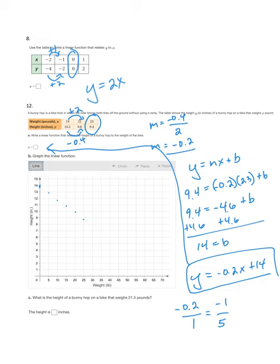Last, I'm going to use this equation to figure out the height. y equals negative 0.2 times 21.5 plus 14. You can simplify that, and that's going to be the height that the bunny hop goes if the bike weighs 21.5 pounds.